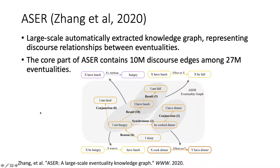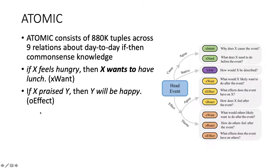Then we introduce the seed common sense resource that we use. We study the if-then common sense knowledge base about daily events, Atomic. There are nine relations defined across causes, effects, and stative relationships. They also distinguish the subjects of the events. Generally, person X is the subject of the head event, and Atomic studies effects on both person X and others like person Y and person Z.